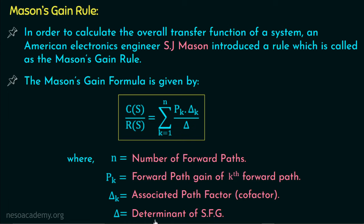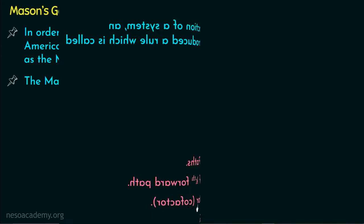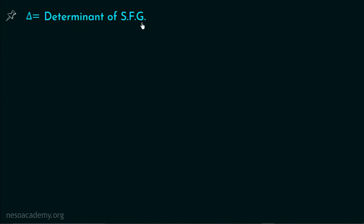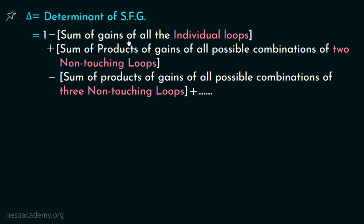We will now discuss how to calculate the determinant of the SFG and the associated path factor. The formula to calculate the determinant of SFG is: 1 minus sum of gains of all individual loops, plus sum of products of gains of all possible combinations of two non-touching loops, minus sum of products of gains of all possible combinations of three non-touching loops, plus so on. We need to identify individual loops and non-touching loops, find their gains, and put them in this formula.